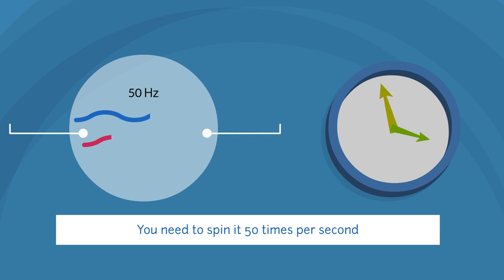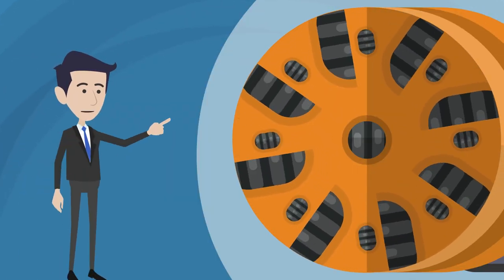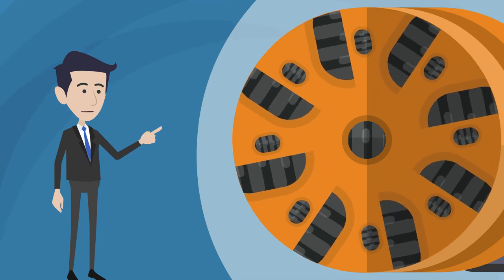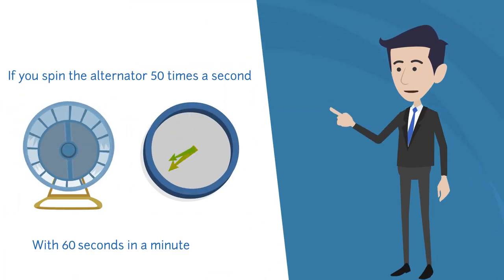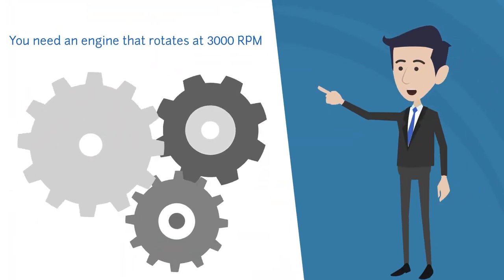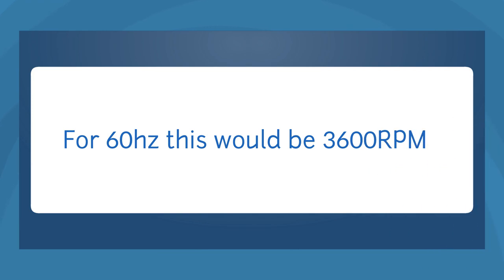Therefore, to create 50 Hz AC, you need to spin it 50 times per second. Engine revolutions are measured in RPM, or revolutions per minute. If you spin the alternator 50 times a second, with 60 seconds in a minute, you need an engine that rotates at 3000 RPM. For 60 Hz, this would be 3600 RPM.